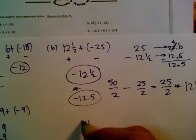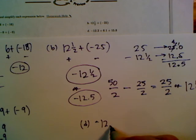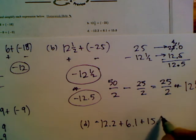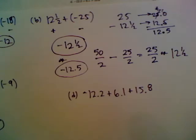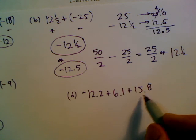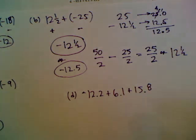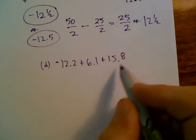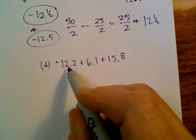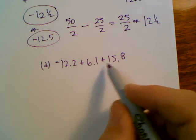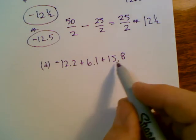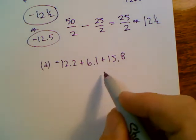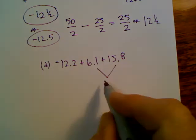Okay. D. Last one. D is negative 12.2 plus 6.1 plus 15.8, or better said, negative 12 and 2 tenths, 6 and 1 tenths, 15 and 8 tenths. Here I have three values I'm adding. So when I'm doing that, you can use the associative property. I'm going to go ahead and add my positives because I have a negative and two positives. I'm going to add my positives first.